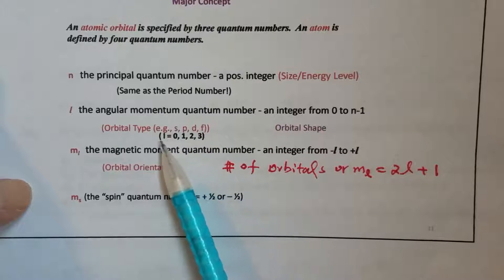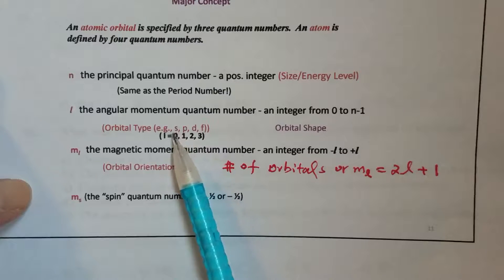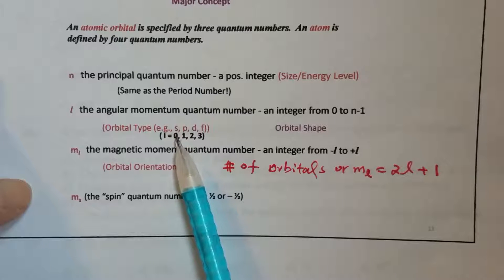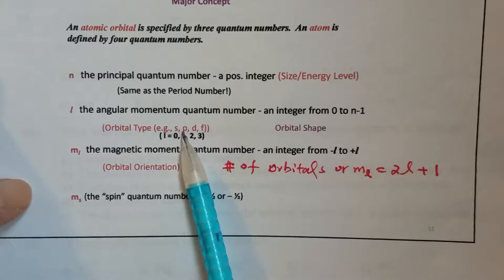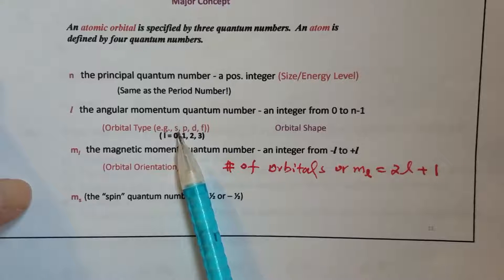Each l value represents an orbital. So l equals 0, there should be an s orbital or s subshell.